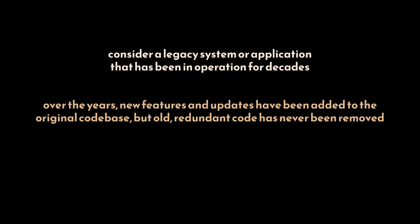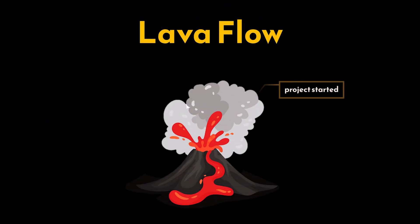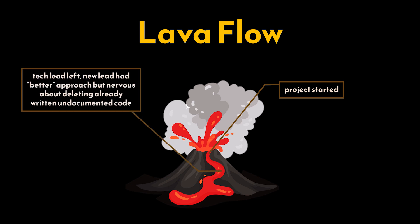Consider a legacy system or application that has been in operation for decades. Over the years, new features and updates have been added to the original codebase, but old redundant code has never been removed. This results in a complex, tangled codebase that's difficult to manage and understand. The lava flow anti-pattern, also known as dead code, is commonly found in systems such as these. It represents pieces of code that initially started as research but ended up in production, or blocks of code that have been replaced by new code but are still present because no one deletes them for fear they might still be needed.